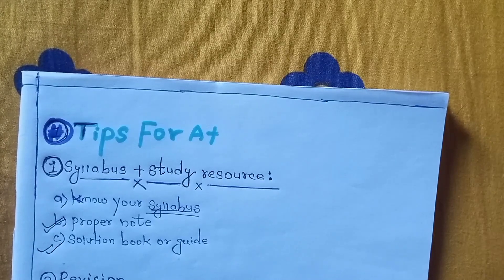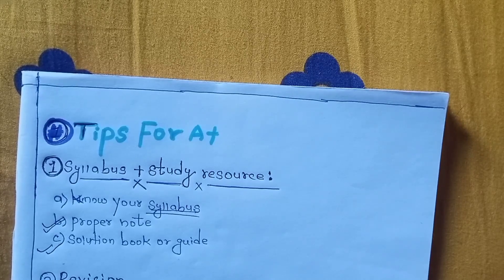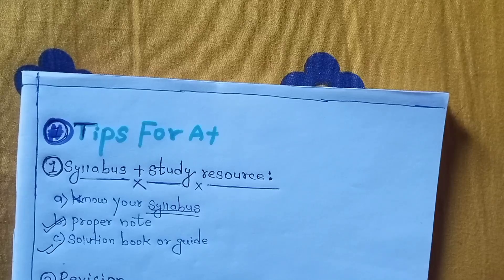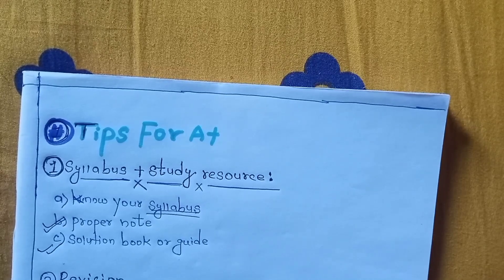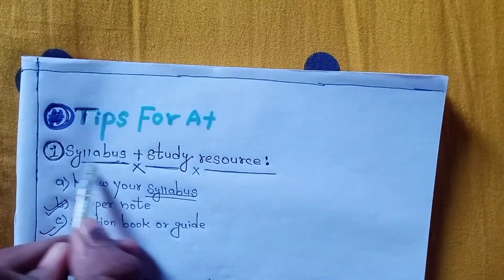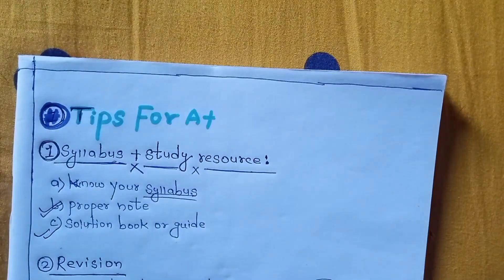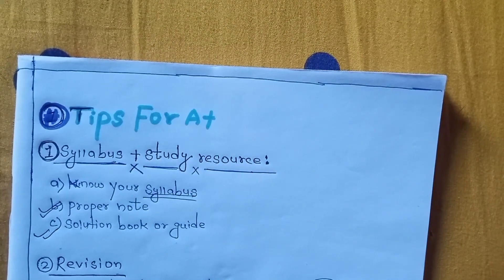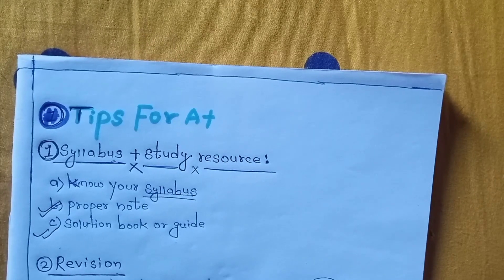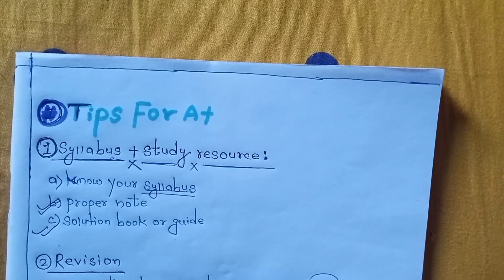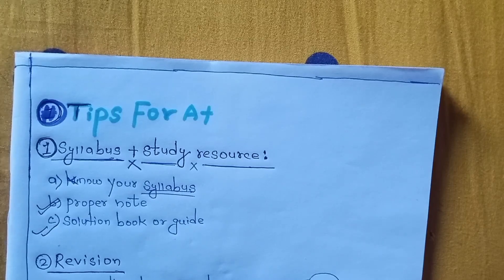Physics, Chemistry, Math — what do you do for a book? There are selection books and guides available. For example, you can read it. Be careful about the syllabus. Read the book thoroughly — it doesn't mean just copy it. Read it and write it down in an A++ list. You have to report and understand it.